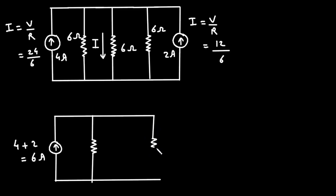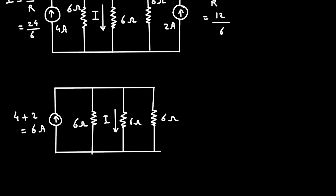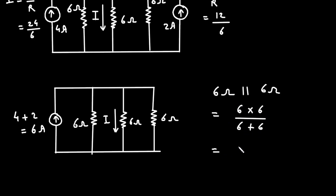There are three resistances connected in parallel: 6 ohm, 6 ohm, and 6 ohm, and we have to find the current I. This 6 ohm and this 6 ohm are connected in parallel, so 6 ohm parallel with 6 ohm gives 6 times 6 divided by 6 plus 6, which equals simply 3 ohm.